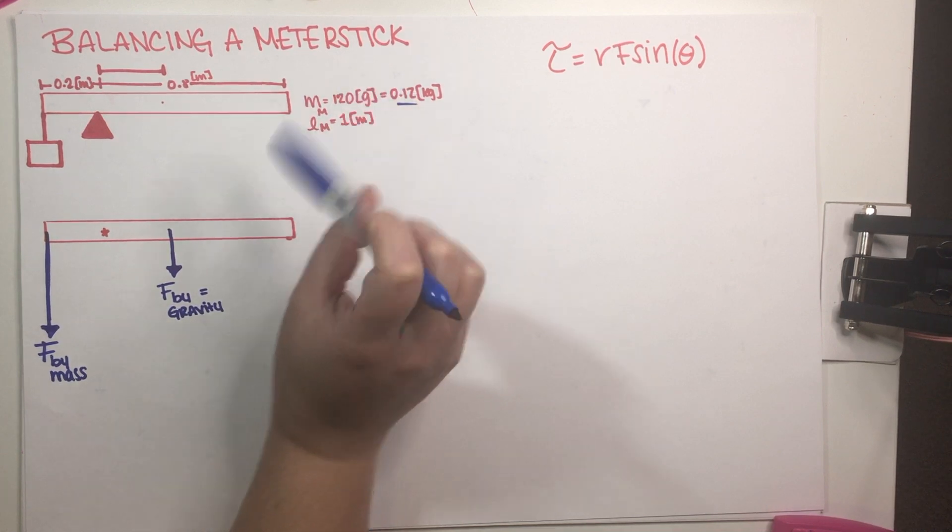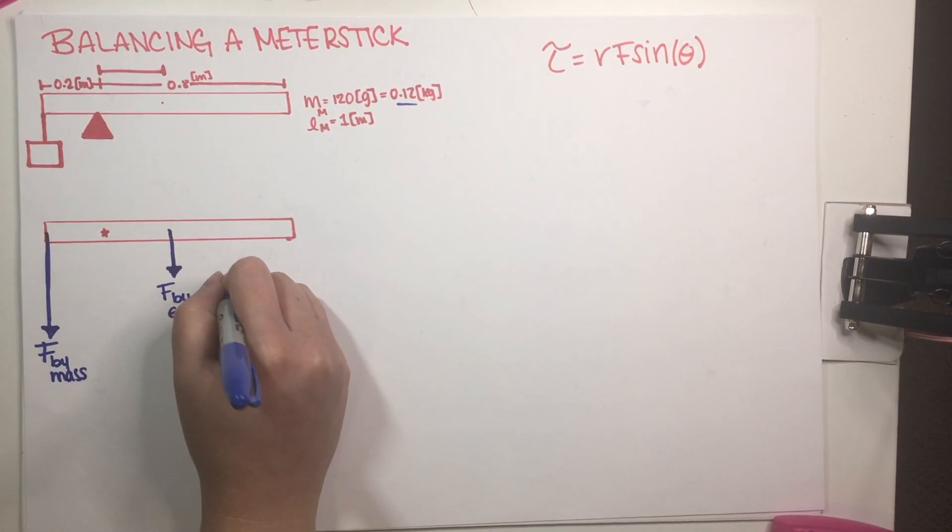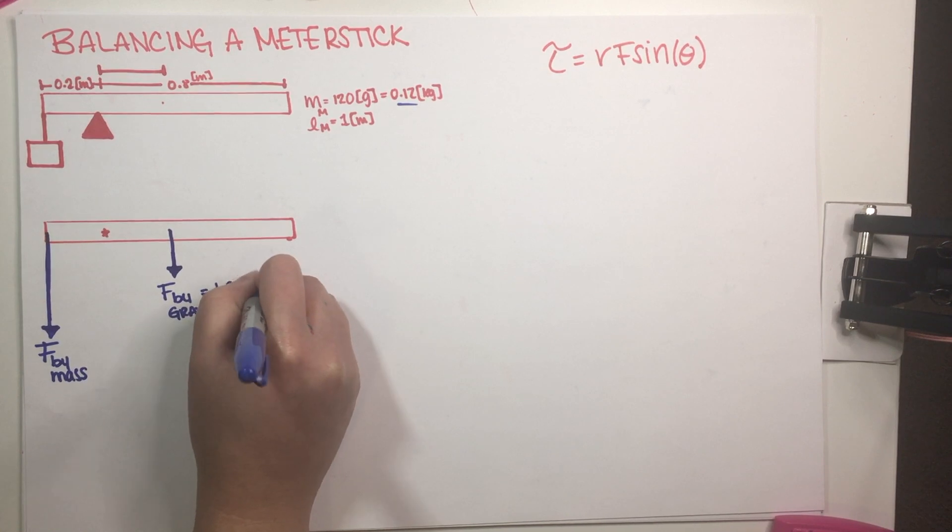And we actually can figure out the value of this force because that would just be the mass of the meter stick times 10, which is G. So I'm just going to go ahead and do that. So that would be 1.2 newtons going down.